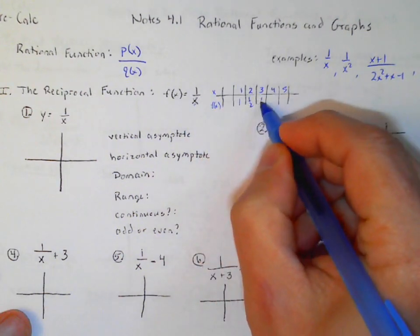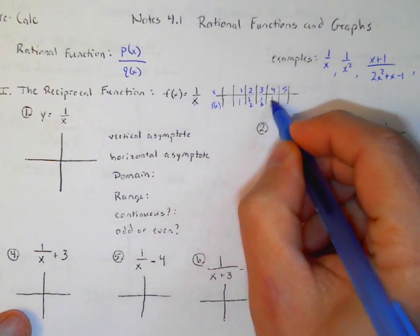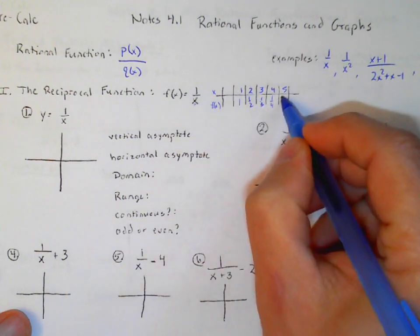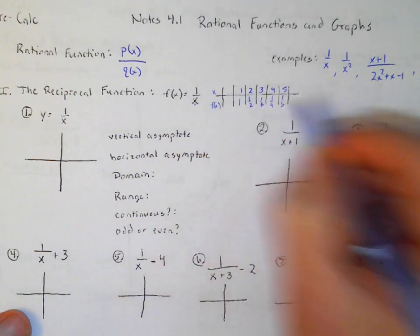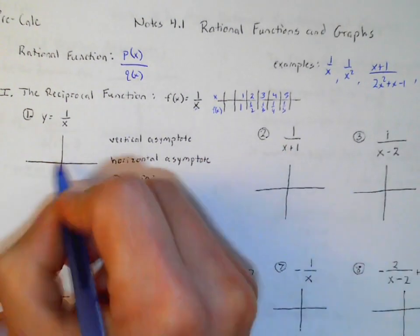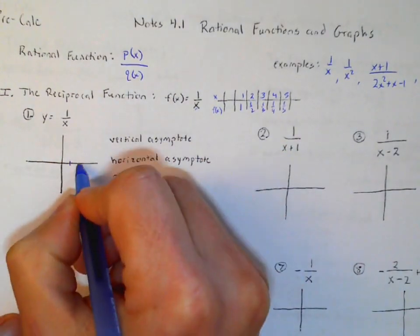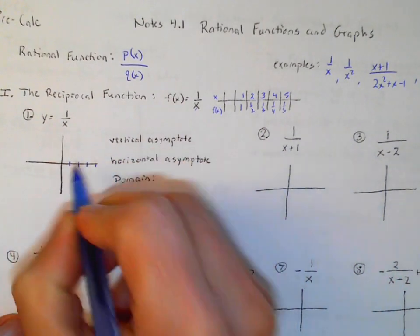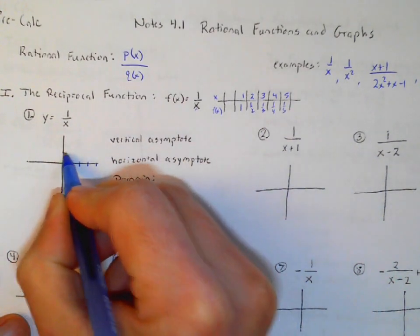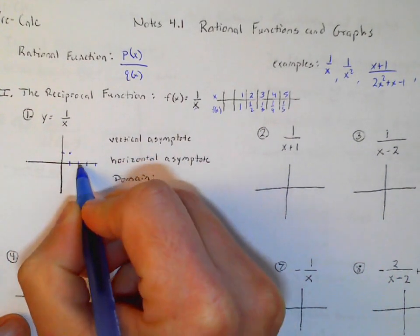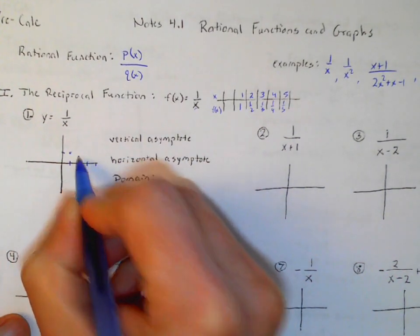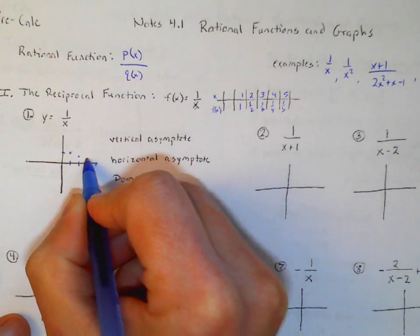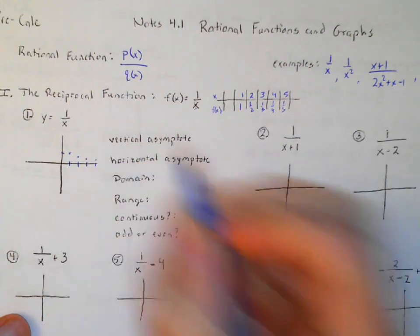Continuing the table: at x=3, f(x) is 1/3; plug a 4 in there, 1/4; plug a 5 in there, 1/5. So at 1, it's at 1; at 2, it's at 1/2; at 3, it's at 1/3; 1/4; and so on.